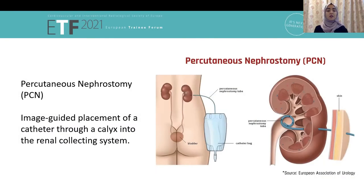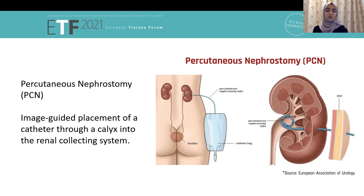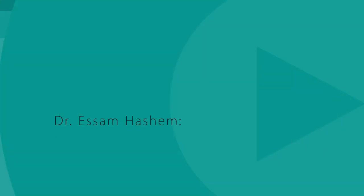Percutaneous nephrostomy is basically image-guided placement of a catheter through a calyx into the renal collecting system. By image-guided we mean generally ultrasound or fluoroscopic guidance. Sometimes a CT-guided procedure is done.